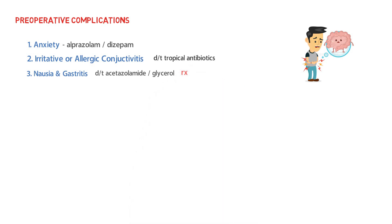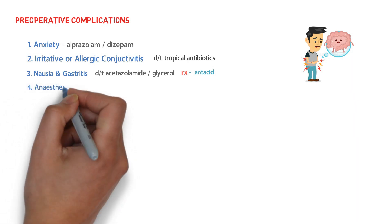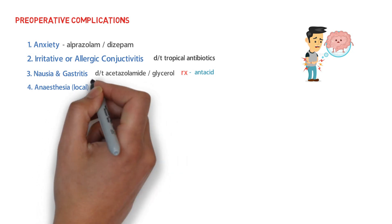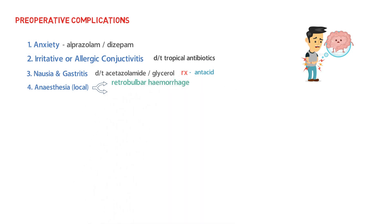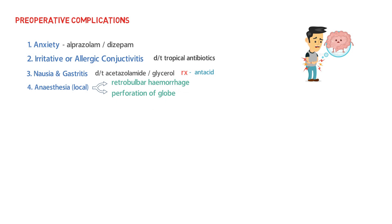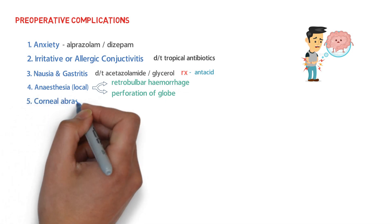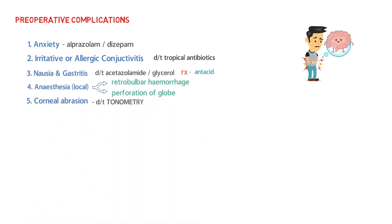Antacids can usually relieve nausea and gastritis symptoms. There can also be complications due to local anesthesia, such as retrobulbar hemorrhage or perforation of the globe. Lastly, there can be corneal aberration due to the use of tonometry.